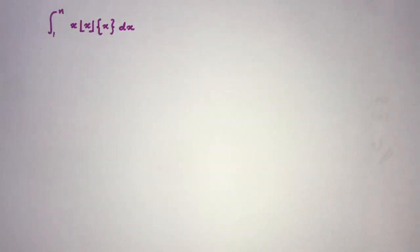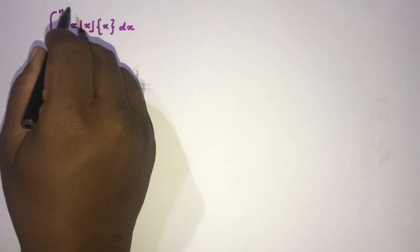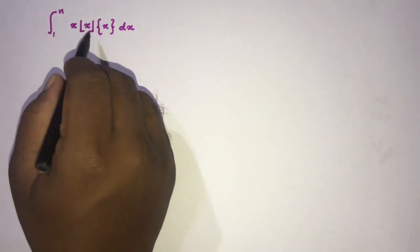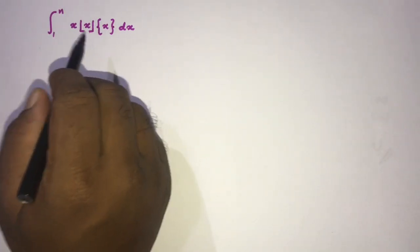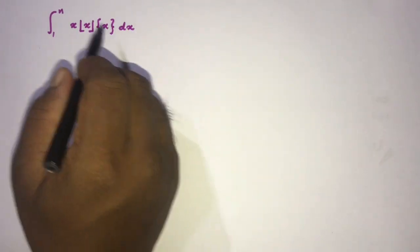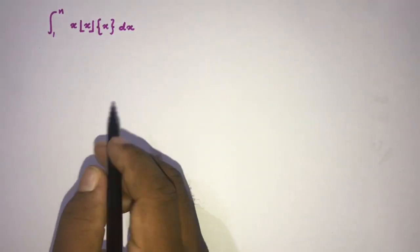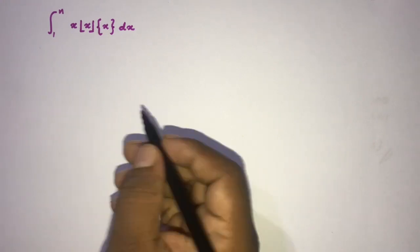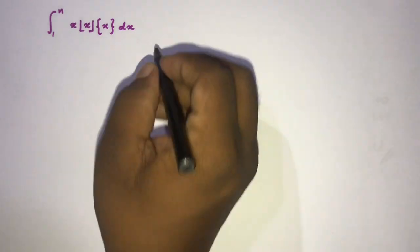Hi, welcome to the Mathematics In My channel. Today we are going to solve another interesting integral. The thumbnail shows the question: integral from 1 to 2021 of x times floor(x) times fractional part of x. Instead of 2021, I'm going to take n, so you can plug in any positive integer.